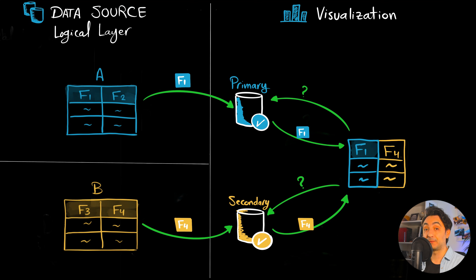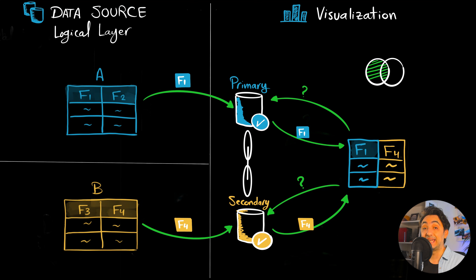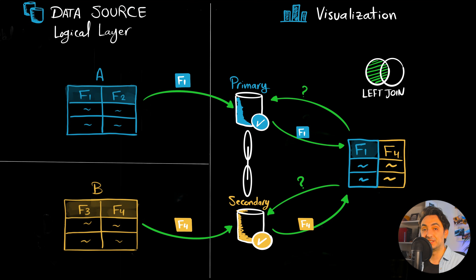In order for this to work — getting data from two different data sources — we have to connect them. This is exactly where we use a very unique feature in Tableau: data blending. Data blending can only be done at the visualization level on the worksheet page, not in the data source. Tableau uses a left join, which is fixed and cannot be changed. It gets all the data from the primary data source and only the matching records from the secondary. To summarize, data blending is the method of combining data at the visualization level from two different data sources using a left join.